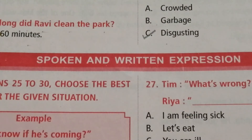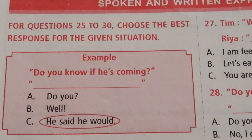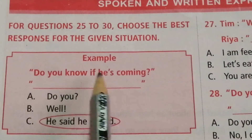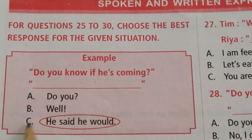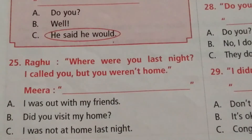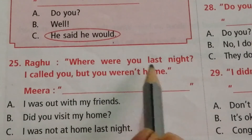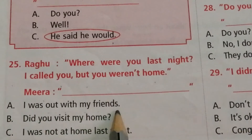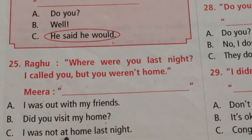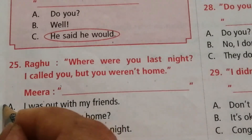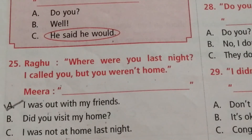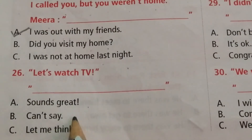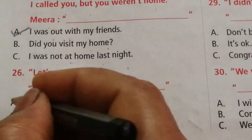Next topic is spoken and written expression. For questions 25 to 30, choose the best response for the given situation. Question 25 — Rahu: Where were you last night? I called you but you weren't home. Meera: Options are — I was out with my friends, did you visit my home, I was not at home last night. The answer is A — I was out with my friends. Question 26: Let's watch TV. Options are sounds great, can't say, let me think. The answer is A — sounds great.